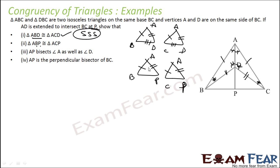I don't see any direct relationship between the third sides, so let's look for an angle. Angle BAP and angle CAP — yes, they are equal. So with side, angle, side, triangles ABP and ACP are also congruent by SAS.